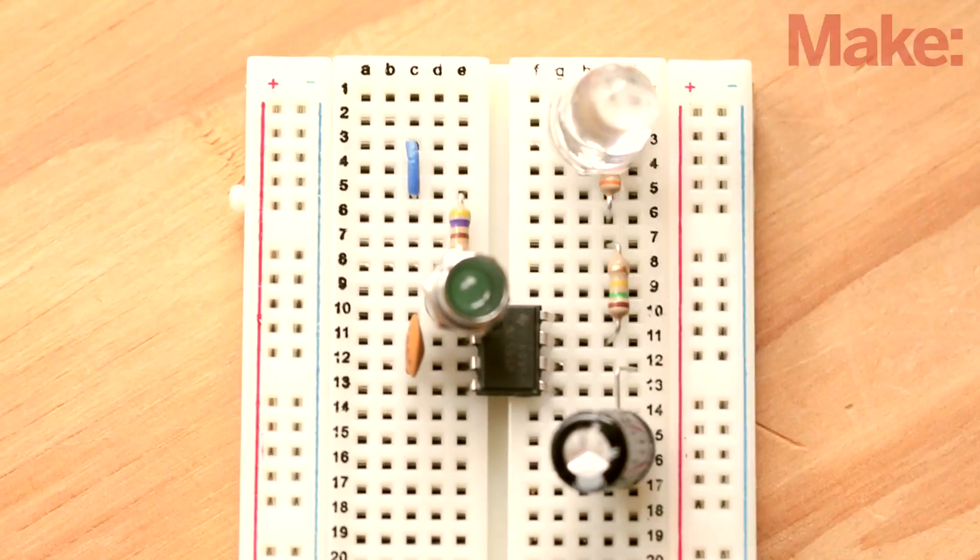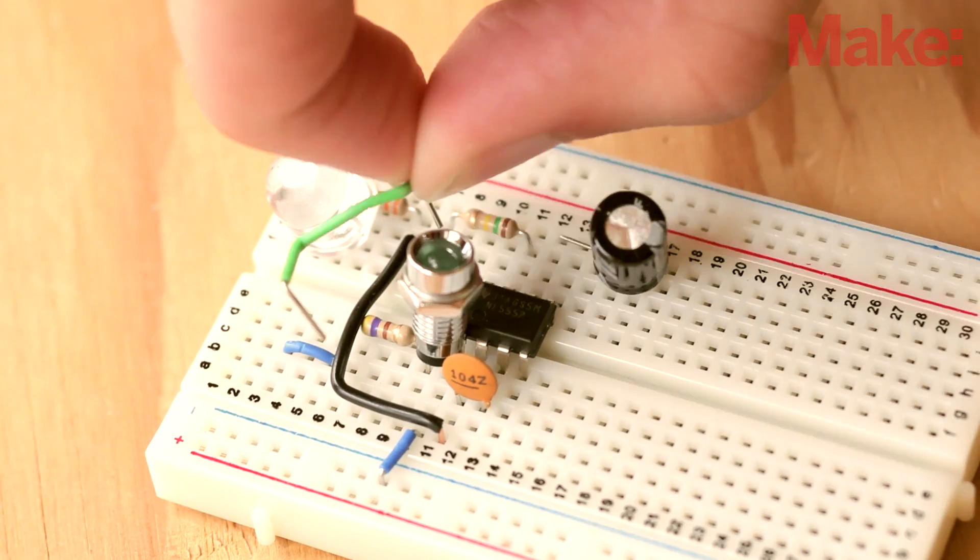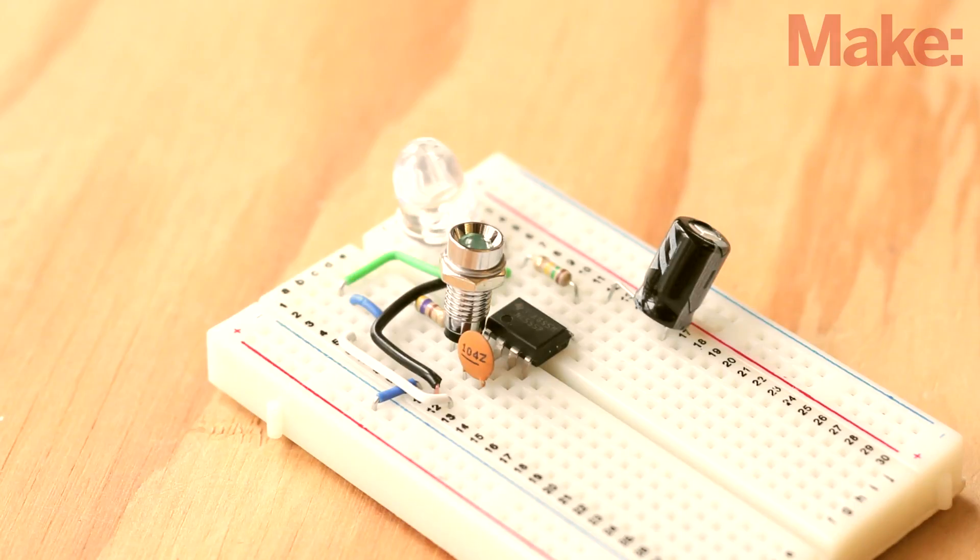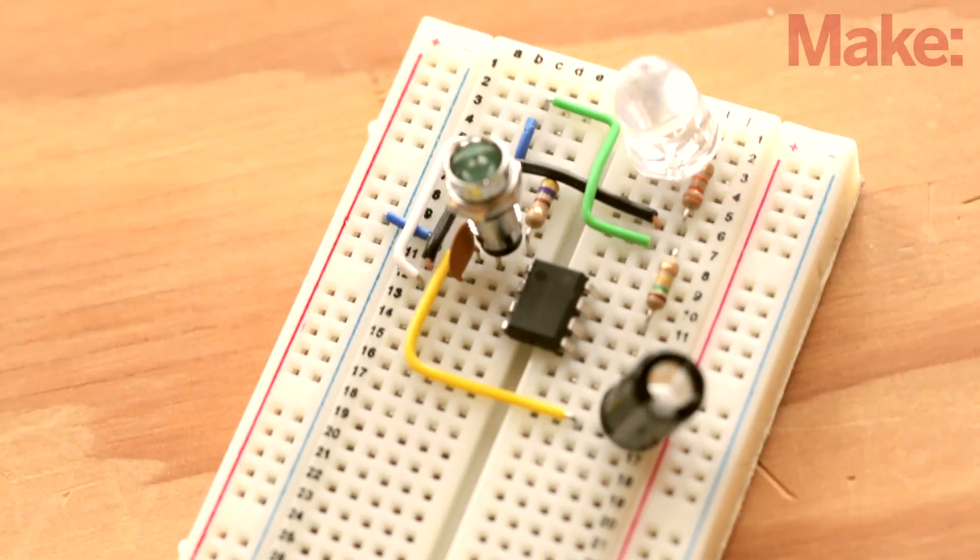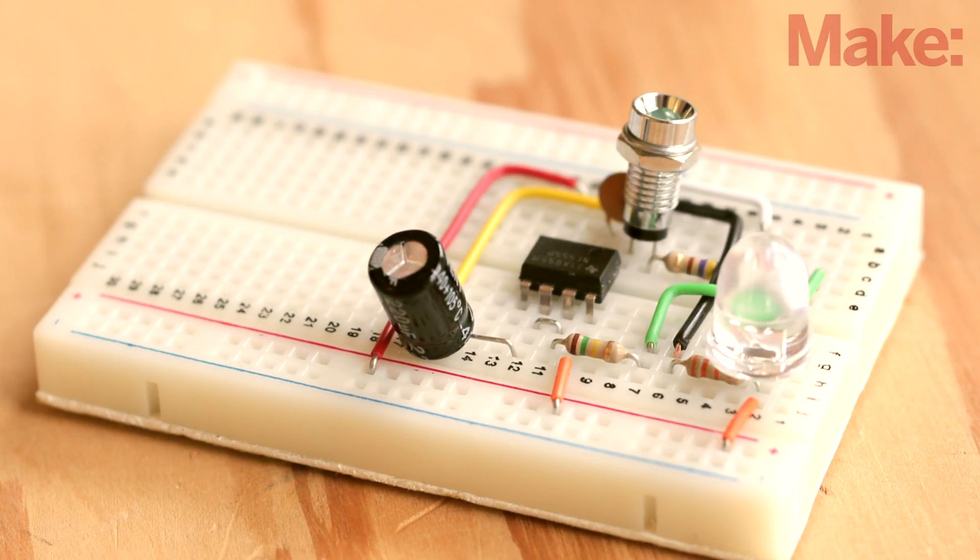Next, we can populate the breadboard with the wires needed to make all the additional connections according to the schematic. There are 10 wires in total, so you might want to try using different colors for each connection. It makes keeping track of things much easier.